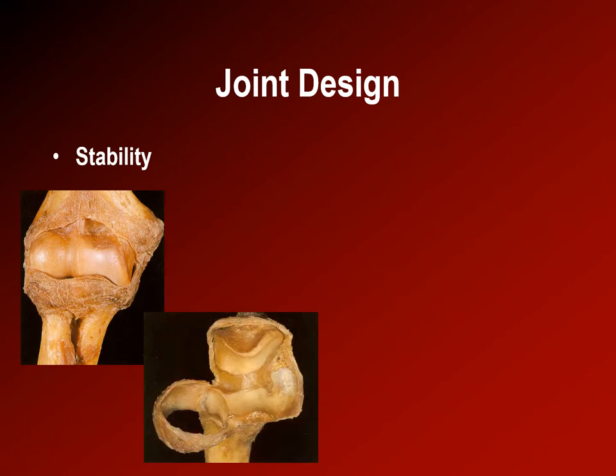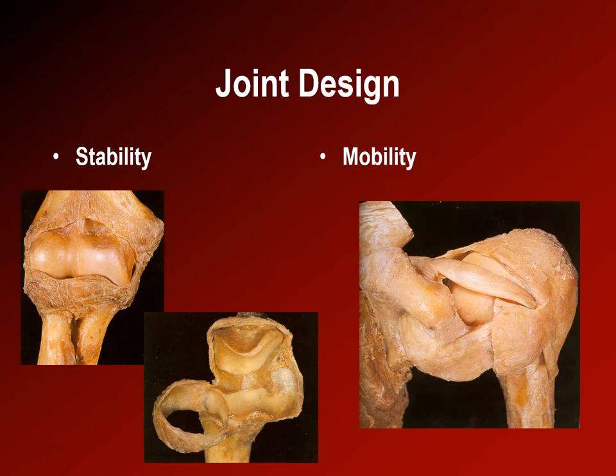Or joints can be designed to be very mobile, like the glenohumeral joint of the shoulder, which we're looking at from above in an anatomical preparation. The glenohumeral joint is the most mobile joint in the whole body, and perhaps unsurprisingly, also the most easily and frequently dislocated.